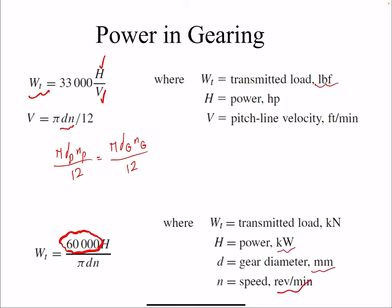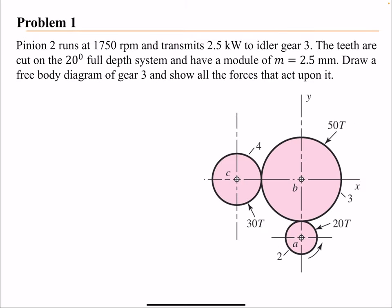Let's look at this problem. Pinion 2 runs at 1750 RPM and transmits 2.5 kilowatts to idler gear 3. Gear 3 is an idler — its number of teeth does not come into play in the velocity ratio, and gear 3 is both driven by gear 2 and a driver for gear 4. The teeth are cut at a 20-degree full-depth system, so the pressure angle is 20°. We have the module, and we want to draw the free body diagram of gear 3 showing all forces acting on it.